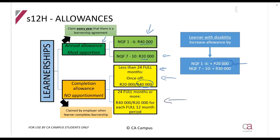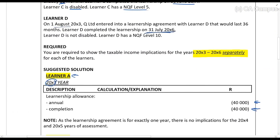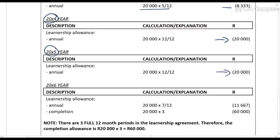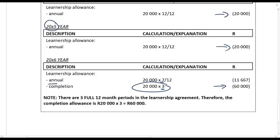For the 20X6 completion allowance for Learner D: the learnership was 36 months, which is 24 full months or more. Therefore, we get the allowance for each full 12-month period. There were three 12-month periods in 36 months, so the completion allowance is 3 times the applicable annual amount.